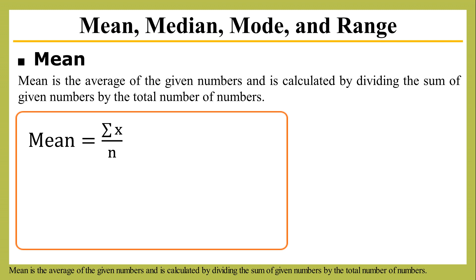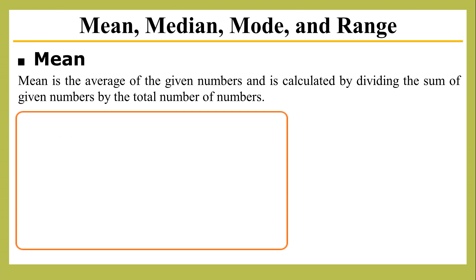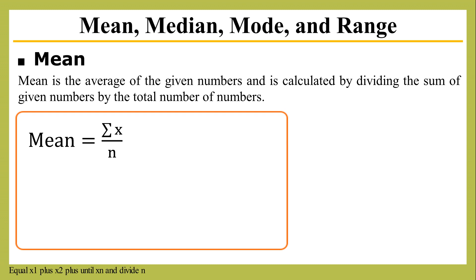Mean is the average of the given numbers and is calculated by dividing the sum of the given numbers by the total count of numbers. This is the formula: mean equals sigma h divided by n, which equals h1 plus h2 plus until hn, divided by n.